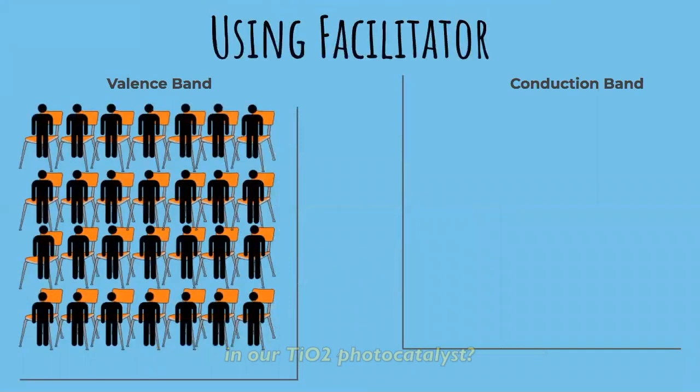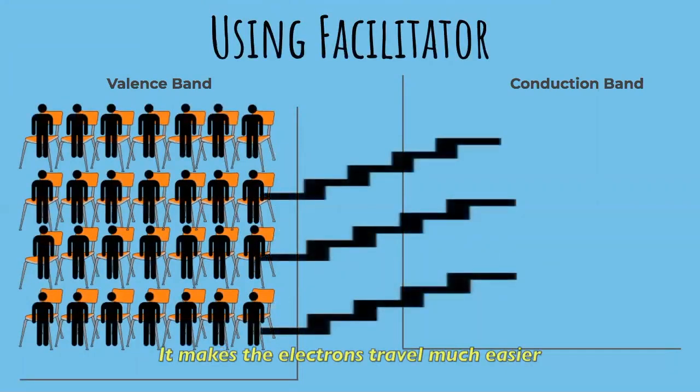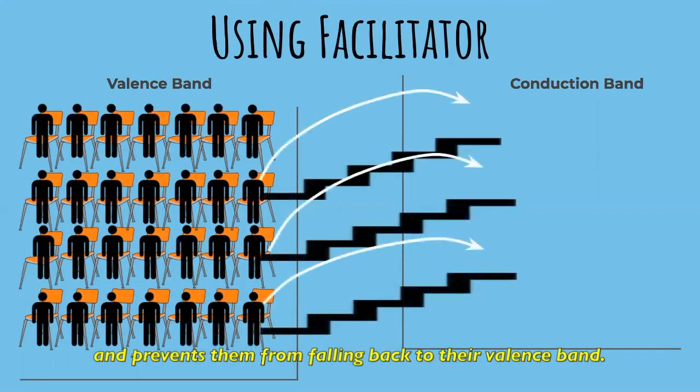Now, what happens if there's a facilitator in our TiO2 Photocatalyst? Whoop! Look at those stairs! It makes the electrons travel much easier and prevents them from falling back to their valence band.